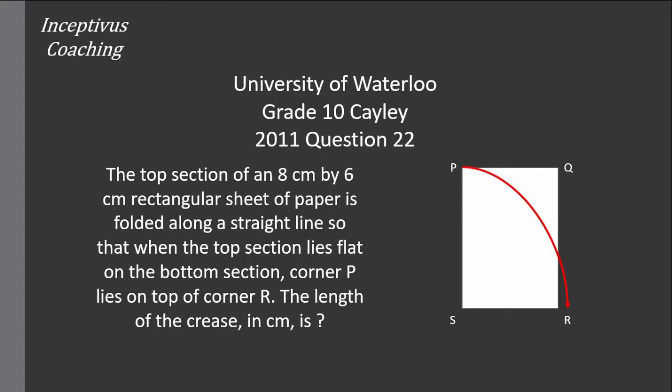The question reads that the top section of an 8 centimeter by 6 centimeter rectangular sheet of paper is folded along a straight line so that when the top section lies flat on the bottom section, corner P lies on top of corner R. What is the length of the crease?